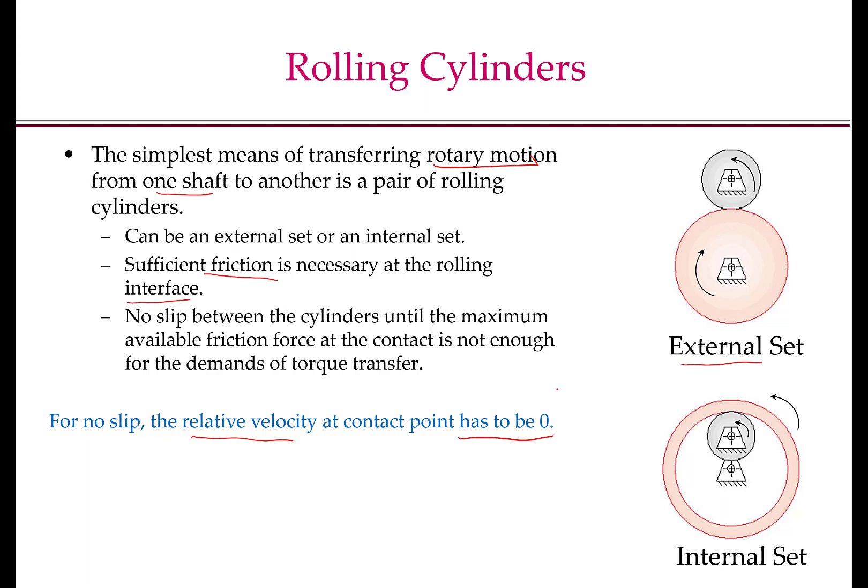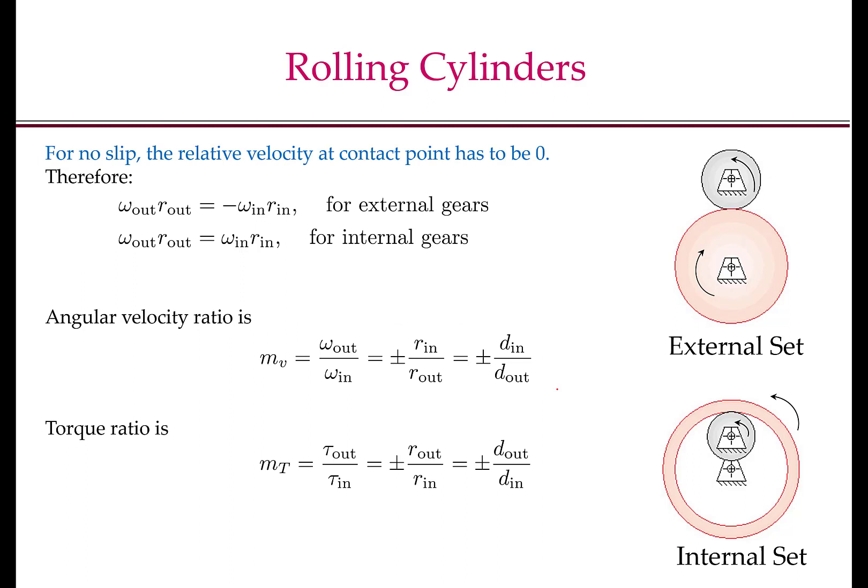Therefore, we use systems like gears, which essentially have the same kinematics as the rolling cylinder but are much more robust in maintaining a constant angular velocity ratio between the input and the output shaft. The kinematics of gears will be the same as kinematics of rolling cylinders, so in this discussion I will be interchangeably using rolling cylinders and gears.